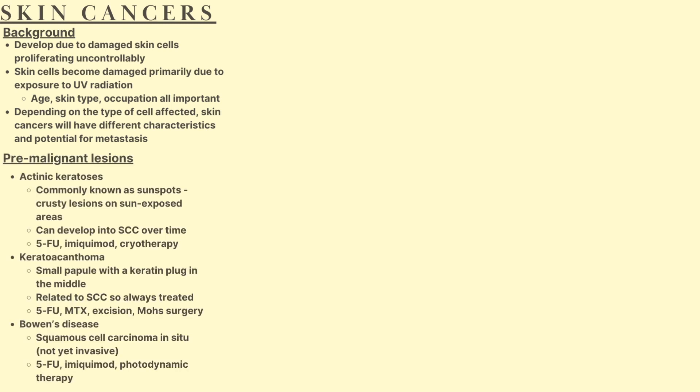Depending on the type of skin cell affected, skin cancers will have different characteristics and potential for metastasis. Before going into the cancerous lesions, there are a couple of pre-malignant lesions to discuss. The first is actinic keratosis, more commonly known as sunspots — crusty lesions on sun-exposed areas like the face, arms, legs, and scalp. These are pre-malignant and can develop into squamous cell carcinomas over time. They're treated with 5-fluorouracil (5-FU) cream, imiquimod cream, or cryotherapy.